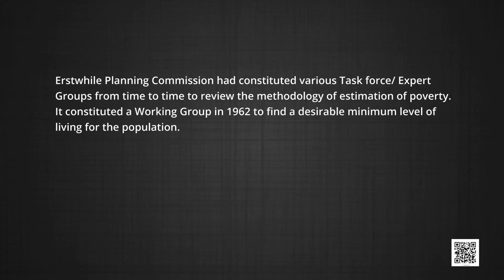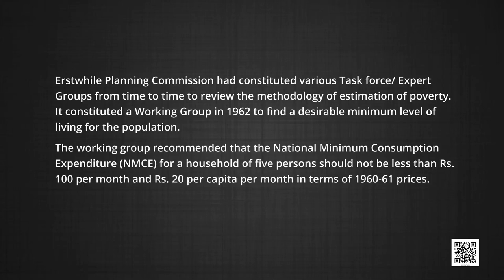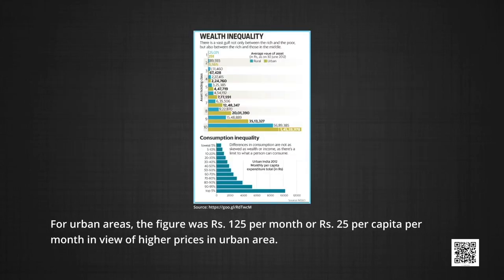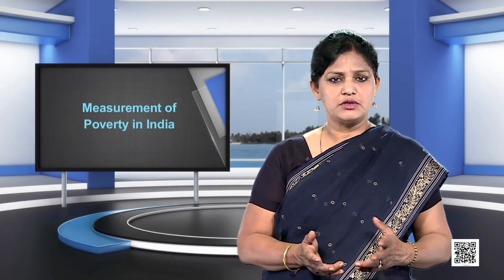The erstwhile planning commission constituted various task force expert groups from time to time to review the methodology of estimation of poverty. It constituted a working group in 1962 to find a desirable minimum level of living for the population. The working group recommended that the national minimum consumption expenditure, popularly known as NMCE, for a household of 5 persons should not be less than rupees 100 per month or rupees 20 per capita per month in terms of 1960-61 prices. For urban areas, the figure was rupees 125 per month or rupees 25 per capita per month, in view of higher prices in urban areas. It may be noted that the poverty line excluded expenditure on education and health, as they were assumed to be provided by the government.